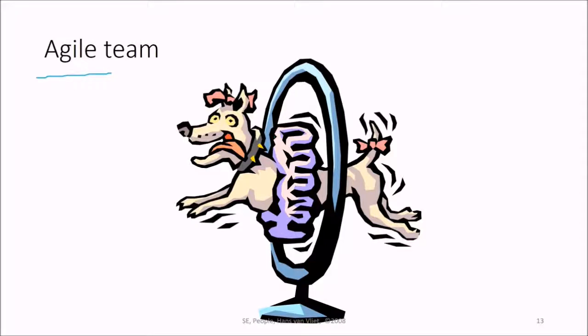Agile teams are very agile. See, this dog is passing through this very tiny hole. Because it's flexible, the job is flexible, it can pass through. Agility is the key.